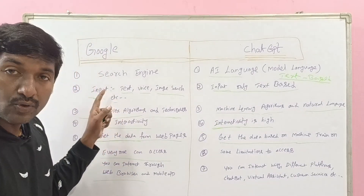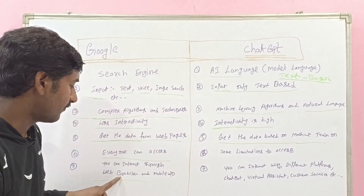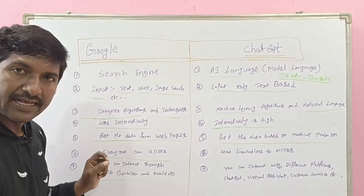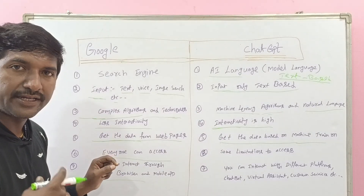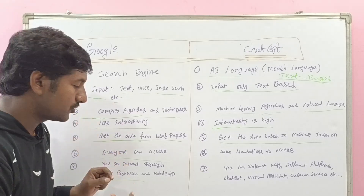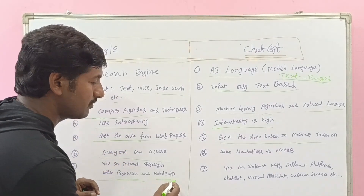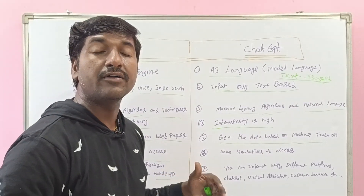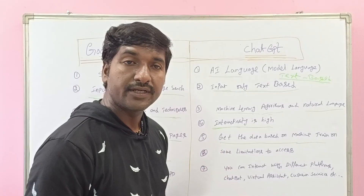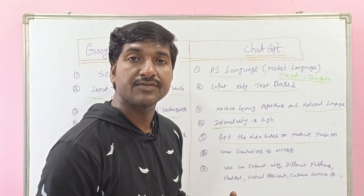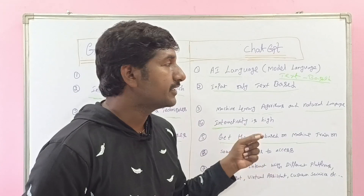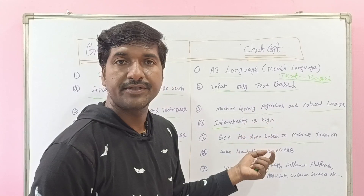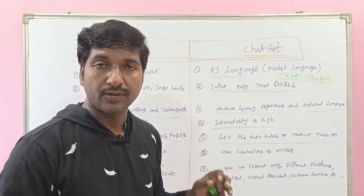The next major difference is platform access. You can access Google through a web browser or mobile apps only. Whereas ChatGPT can be used on various platforms including chatbots, virtual assistants, and customer services. If you integrate ChatGPT with an API, you can use it on many different platforms.